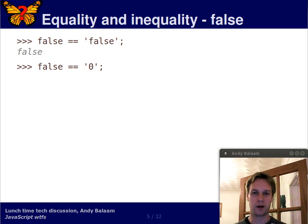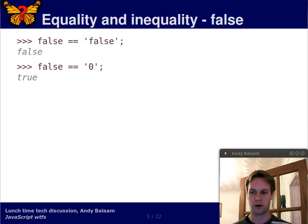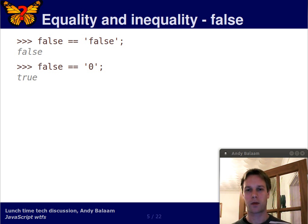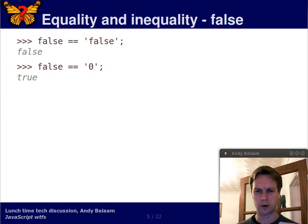Here's the first example: the boolean value false is equal to the string value zero. You might well ask yourself why. The answer is that the double equal operator will always try and convert its arguments to a common form before comparing them. In this case, I'm guessing they get converted to numbers and they both get converted to zero.